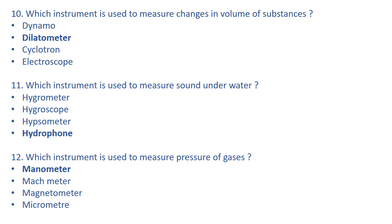Which instrument is used to measure the pressure of gases? The answer is manometer. Mach meter is an instrument used to determine the speed of an aircraft in terms of the speed of sound. Magnetometer is used to compare magnetic moment and field. Microphone is an instrument used to convert sound waves into electrical vibrations.